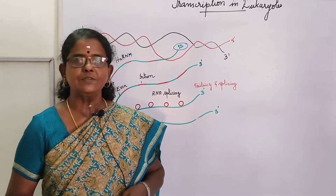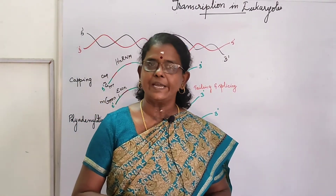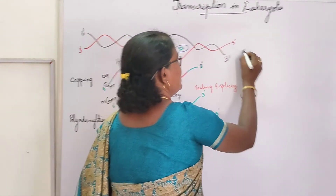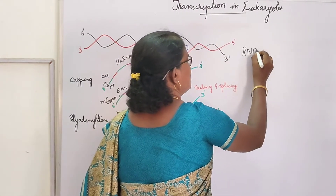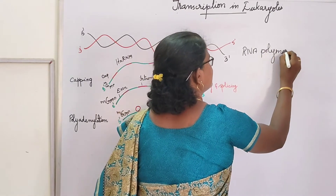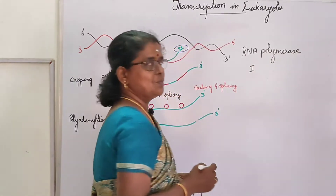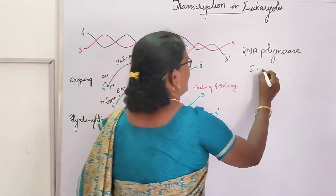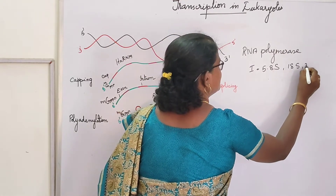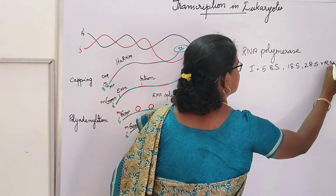In eukaryotes, transcription takes place in the nucleus. There are three different types of transcribing enzymes. They are RNA polymerase 1, RNA polymerase 2, and RNA polymerase 3. RNA polymerase 1 is responsible for synthesizing 5.8S, 18S, and 28S rRNA.